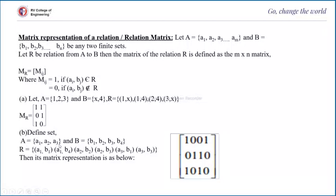One more example: A = {a1, a2, a3}, B = {b1, b2, b3, b4}, and R = {(a1,b1),(a1,b4),(a2,b2),(a2,b3),(a3,b1),(a3,b3)}. The size of the matrix is 3×4 (3 rows and 4 columns). A1B1 → row 1, col 1 = 1; A1B4 → row 1, col 4 = 1; A2B2 → row 2, col 2 = 1; A2B3 → row 2, col 3 = 1; A3B1 → row 3, col 1 = 1; A3B3 → row 3, col 3 = 1. The number of 1s in the matrix equals the number of elements in the relation R. This is the matrix representation of a relation.